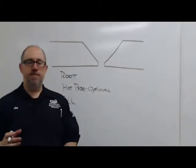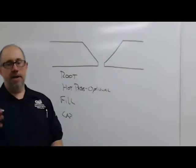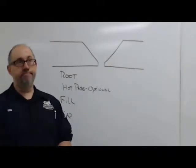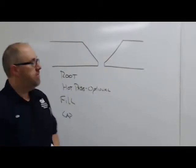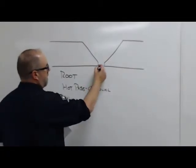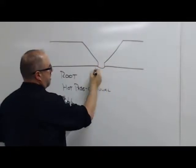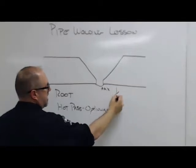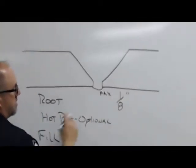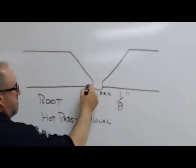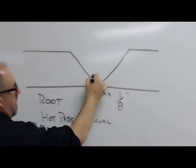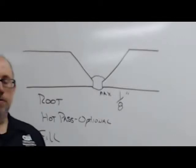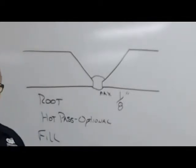The purpose of the root is to fuse the two pieces together, provide a weld on the inside of the pipe, and provide a good enough base so that you can put your cap in over the top of it. So, when I run a root, I want the inside of it to look like a weld. Max reinforcement is 1/8 inch on the inside of the pipe.